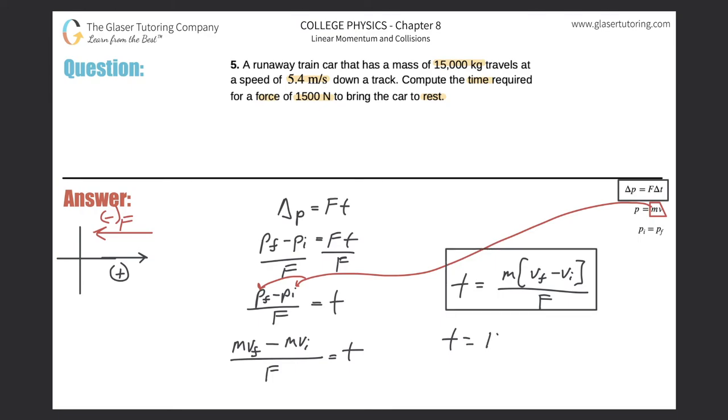So the time equals the mass of this object - they told us it was 15,000 kilograms - times its final velocity of zero minus its initial velocity of 5.4 meters per second. That's a positive value, but when you subtract it, it's going to be negative. Then the force applied was 1500 Newtons, but remember the force has to be in the negative x-direction to stop the car, so that's just going to be negative there.